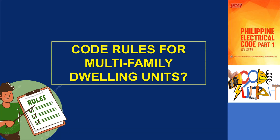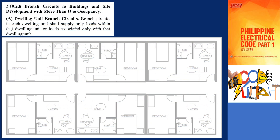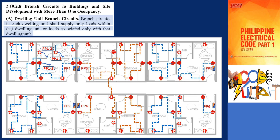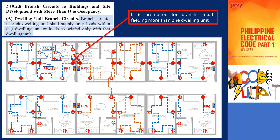What are the code rules for multifamily dwelling units? As per subsection 2.10.2.8b, it is specified that branch circuits within each dwelling unit should solely supply loads within that particular dwelling unit or loads associated exclusively with that dwelling unit. This means that receptacle outlets, for instance, should be designed and allocated specifically for each dwelling unit. Including receptacle outlets from other dwelling units in the branch circuit of a different dwelling unit is strictly prohibited.